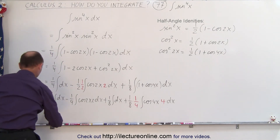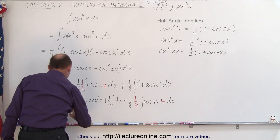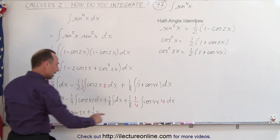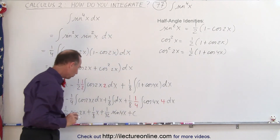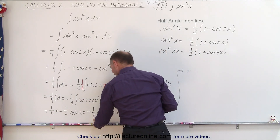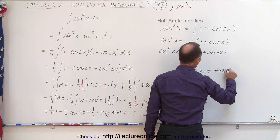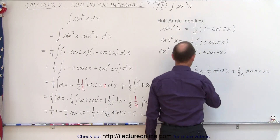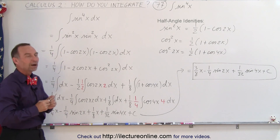We can now integrate all four integrals. This becomes 1 quarter x, minus 1 quarter times the sine of 2x, plus 1 eighth x — notice that those two x terms can be combined — plus 1 over 32 times the sine of 4x, plus a constant of integration. Combining those two terms, the answer is 3 eighths x, minus 1 quarter times the sine of 2x, plus 1 over 32 times the sine of 4x, plus a constant of integration. That is the result when we integrate sine to the fourth power of x.